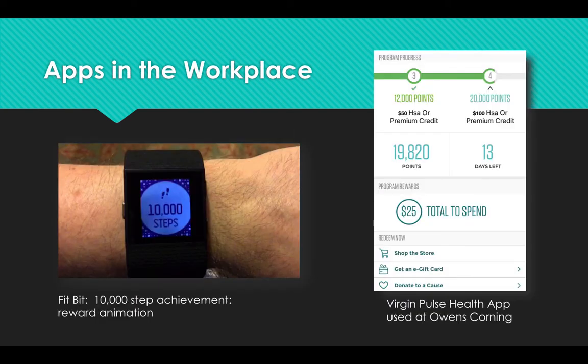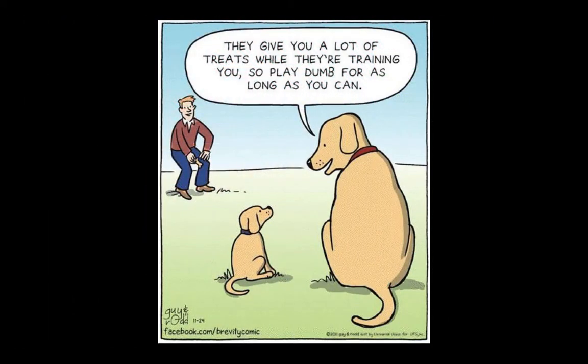In the adult world, companies are using health device technologies such as Fitbits to monitor their employees' health. In exchange for meeting company health goals, Owens Corning employees can earn monetary incentives such as premium health insurance credits. It was humorous to hear that you can keep tracking points after you meet your quarterly goal, but no one does — because there's no longer an incentive. So again, even though rewards can work to change behavior, they are limiting: once the reward stops, so does the behavior.